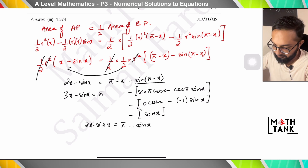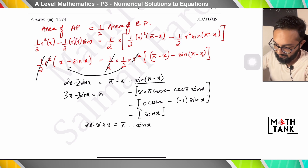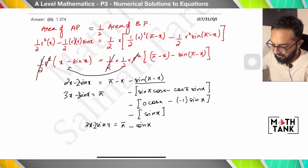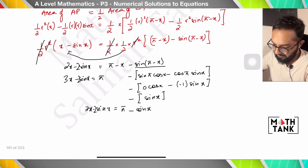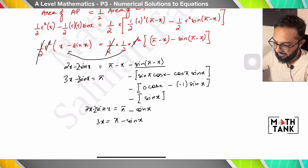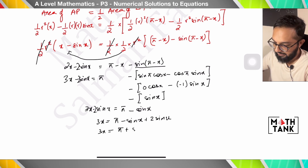Collecting terms: bringing x to the left gives 3x. And sin terms: −2 sin x + sin x = −sin x on the left, but accounting for the 2× factor correctly, we get 3x = π + sin x, therefore x = ⅓(π + sin x). That is the required proof.